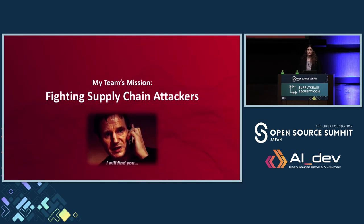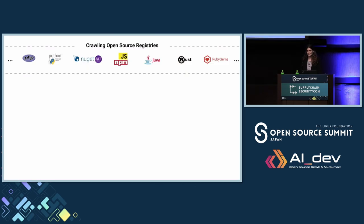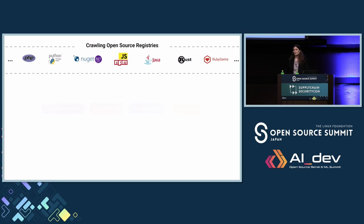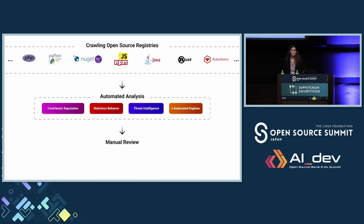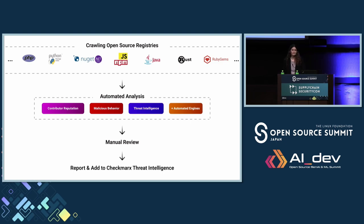My team's mission is fighting against software supply chain attackers. This is how we do it: we crawl different open source registries — PyPI, NPM, Rust, and more. Then we created some automatic engines that go through the code and the metadata and look for something malicious. After that, we have an analyst team that goes through the results. And if we find something malicious, we report it, add it to the threat intelligence, and usually post interesting blogs about it.